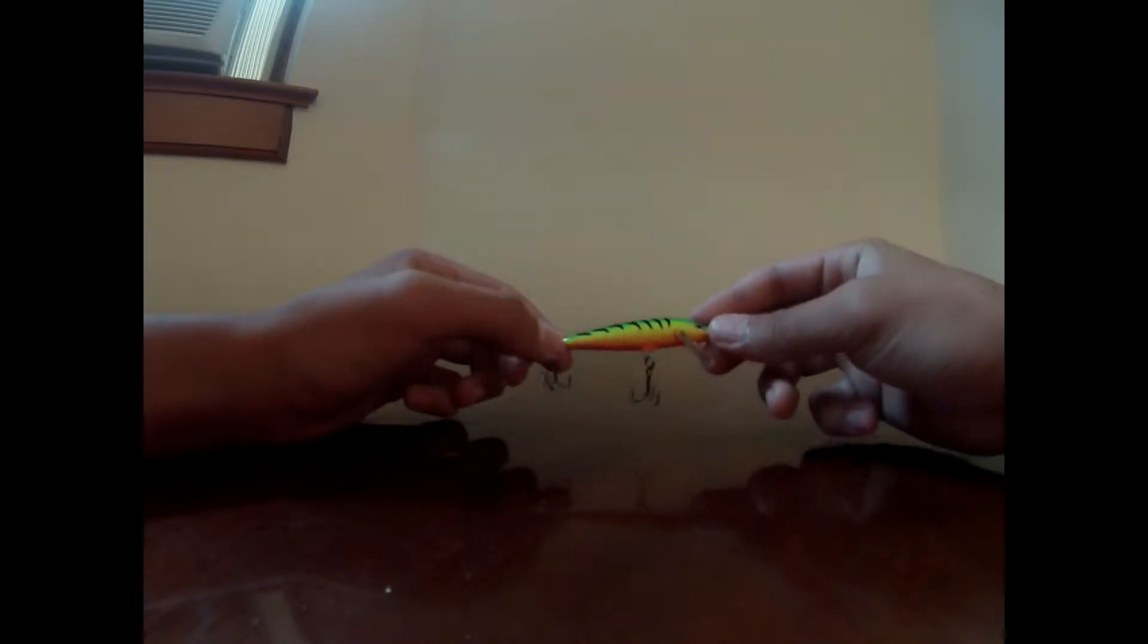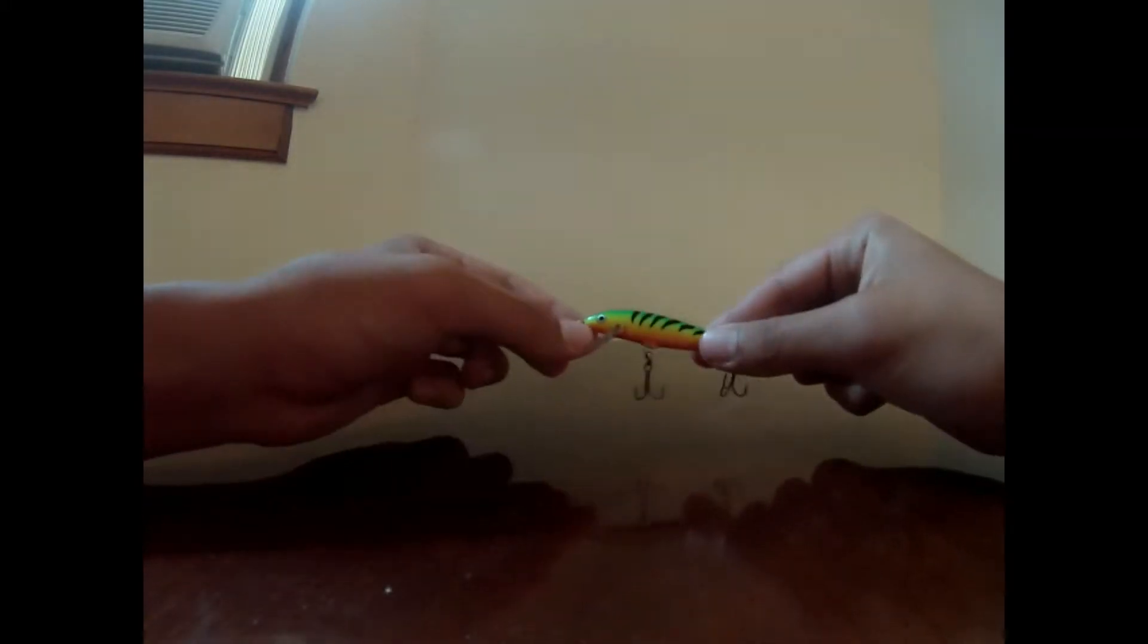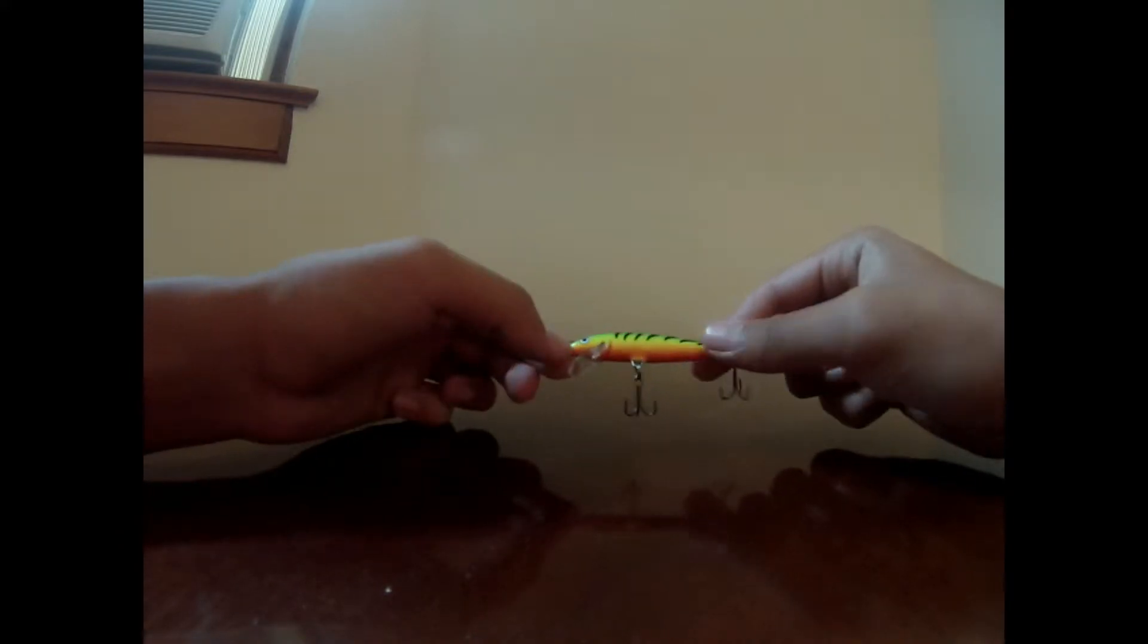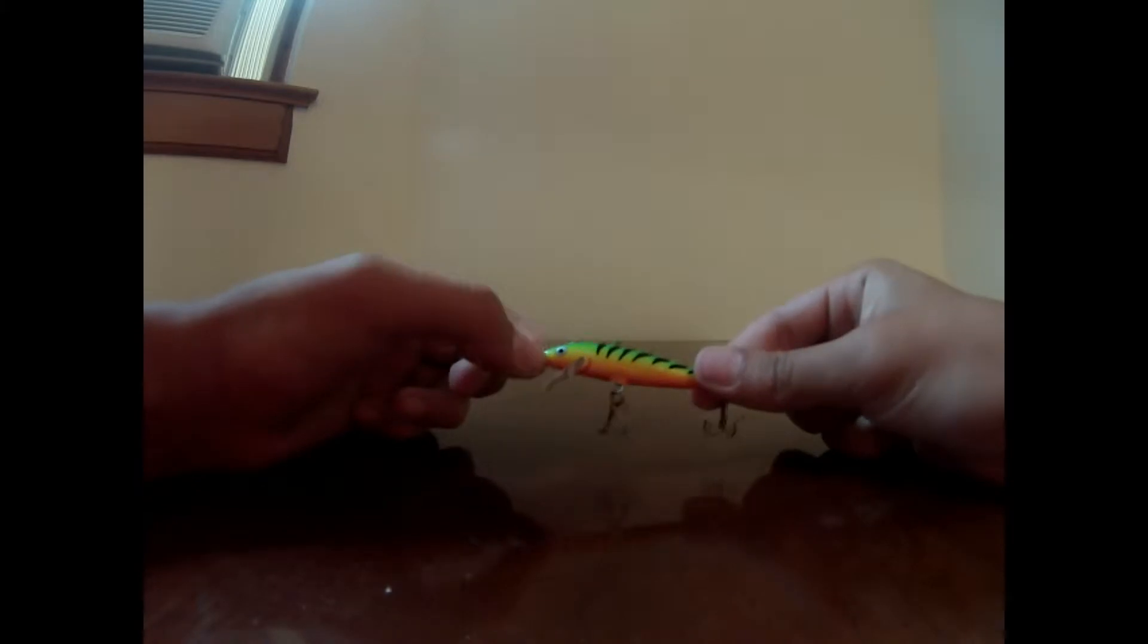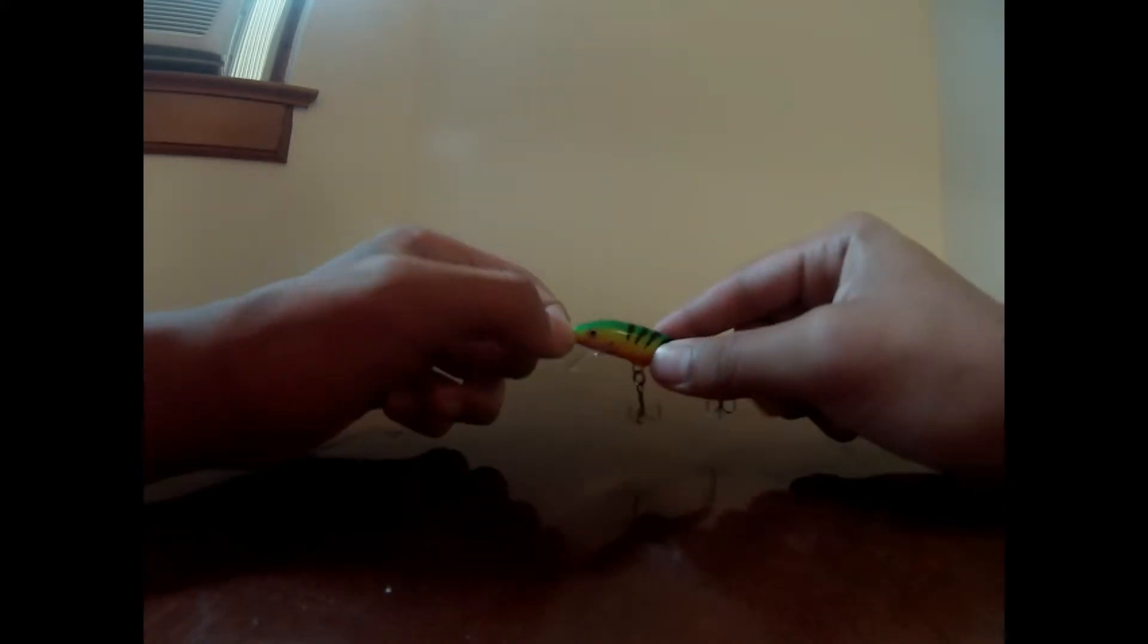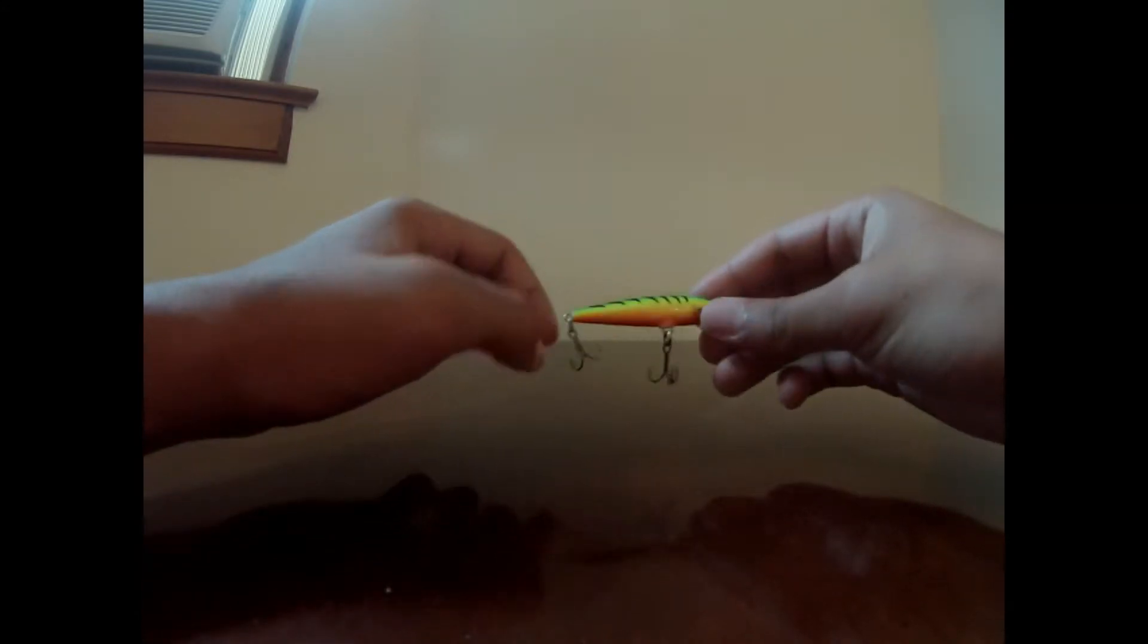Alright guys, so the very first lure that I have on my countdown is the Floating Rapala in Fire Tiger Color. I just like to use this when I'm casting off docks or if I'm having a bad day with my other baits. This is just one of my premium go-to baits, so you should give it a try.